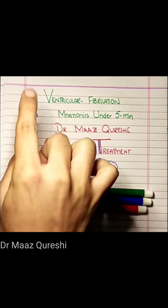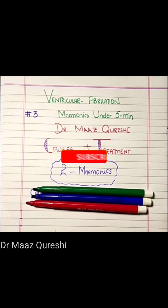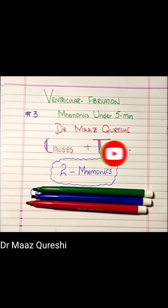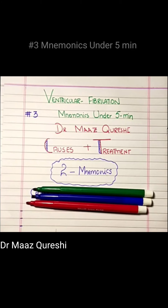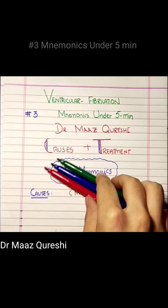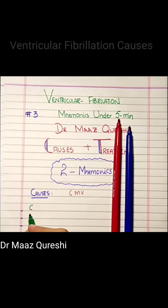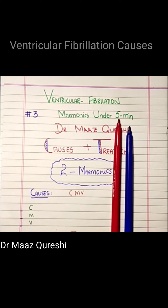The hashtag number three shows that I have been making two past videos from the playlist 'Mnemonics Under Five Minutes.' So let's get to it. For causes, we have a mnemonic which is basically a virus known as cytomegalovirus — CMV.